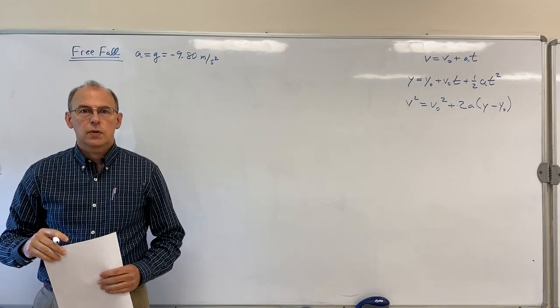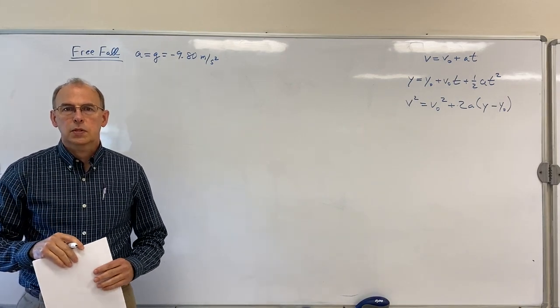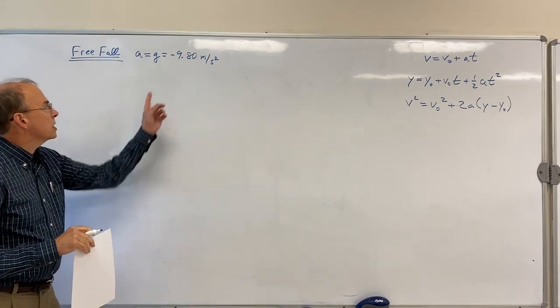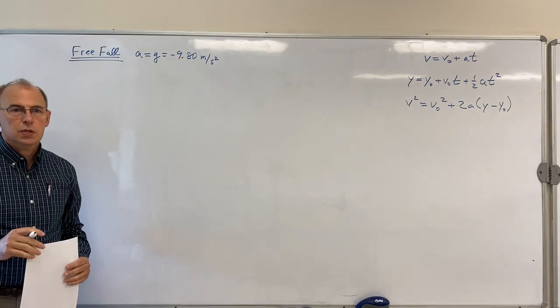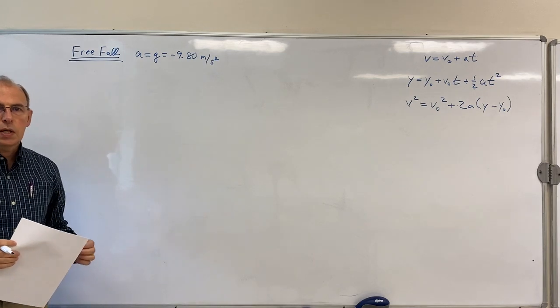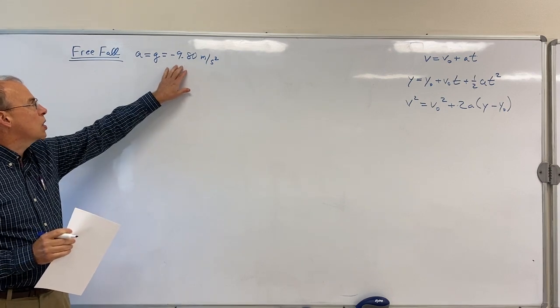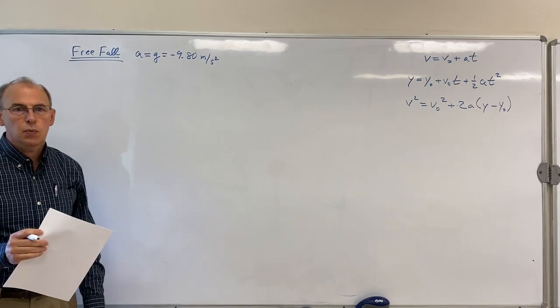Hello again. You saw in the video that all objects near the surface of the earth fall with the same acceleration g = -9.8 meters per second squared. This is yet another example of uniform acceleration, except in this case we always know the acceleration is -9.8.